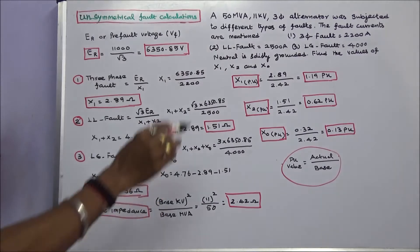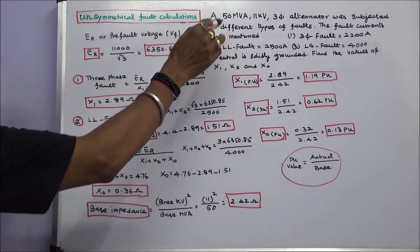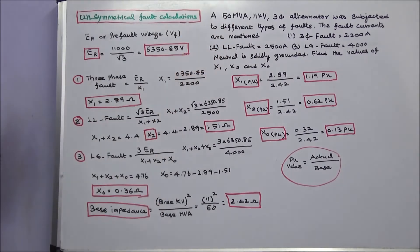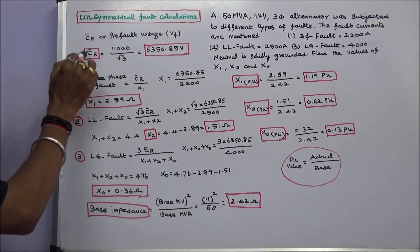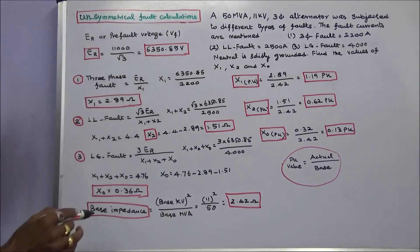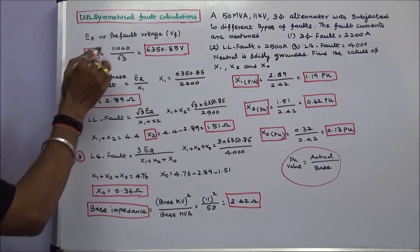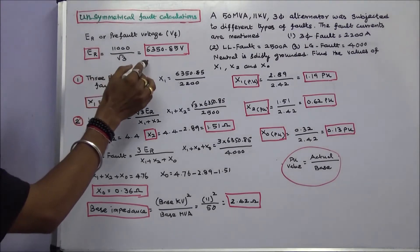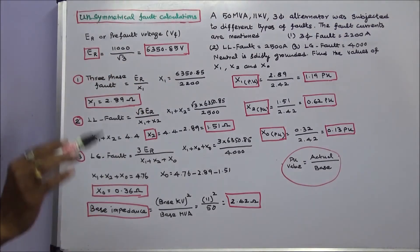The rating is 50 MVA, 11 kV. We have to find ER, the pre-fault voltage VF. ER is equal to 11000 divided by root 3, that is equal to 6350.85 volts — that is the per-phase voltage.